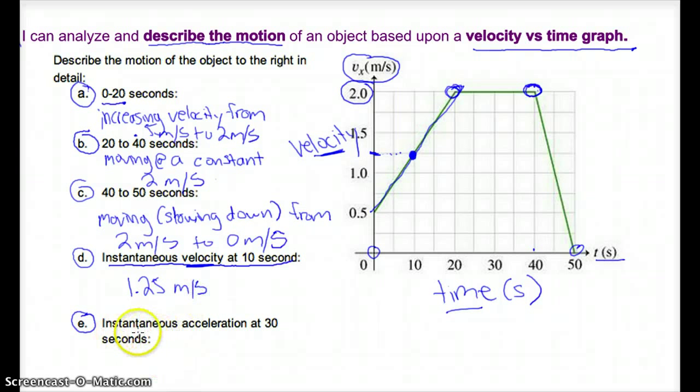The next one asks what the instantaneous acceleration is at 30 seconds. So let's go up to 30 seconds. The line is flat because you're moving at a continuous 2 meters per second here. So clearly we're not accelerating from this point to this point. We're moving the same speed, so we're not accelerating at all between 20 and 40 seconds, including this point. My instantaneous acceleration at 30 seconds should be 0 meters per second. It's actually 0 meters per second per second, or 0 meters per second squared. Thank you.